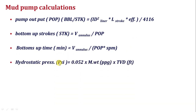Hydrostatic pressure in psi equals 0.052 multiplied by mud weight in ppg multiplied by true vertical depth in feet. Remember the key difference: pressure calculations require true vertical depth in feet, while volume calculations require measured depth in feet.